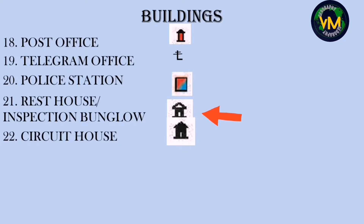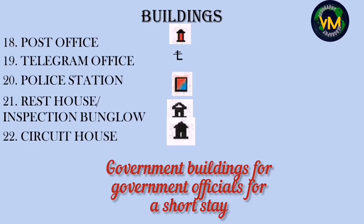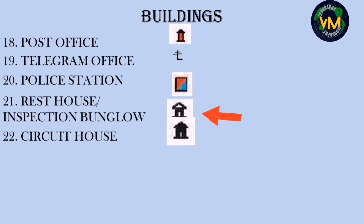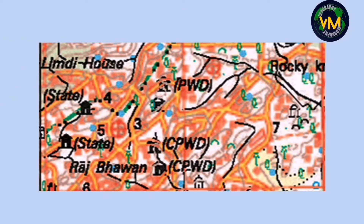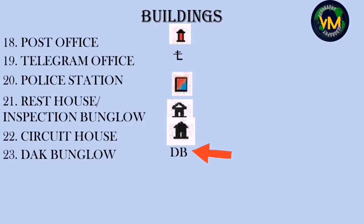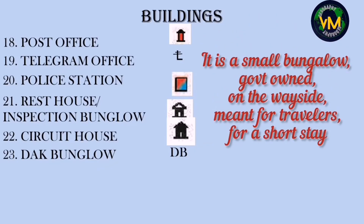Number twenty-one is rest house or inspection bungalow, and number twenty-two is a circuit house. Both are government buildings for government officials for a short stay. A memory tip: the rest house symbol has a white roof. Number twenty-three is dak bungalow — a small government-owned bungalow on the wayside, meant for travelers for a short stay.